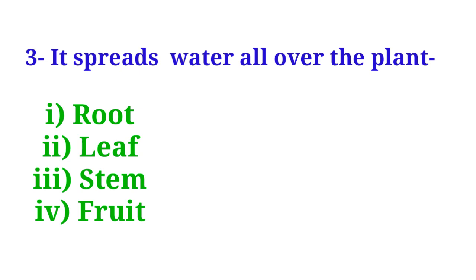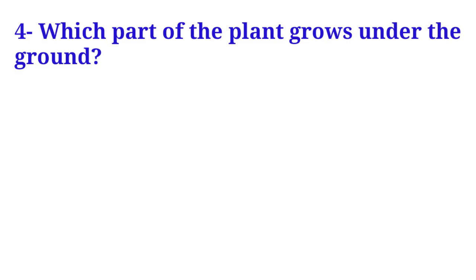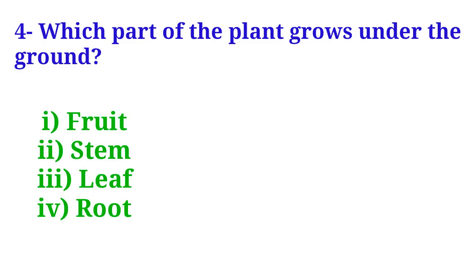Your next question is: It spreads water all over the plant — root, leaf, stem, or fruit? The correct answer is stem. Your next question is: Which part of the plant grows under the ground — fruit, stem, leaf, or root? The correct answer is root. So kids, we end this video here and we'll meet in the next video. Till then, bye bye.